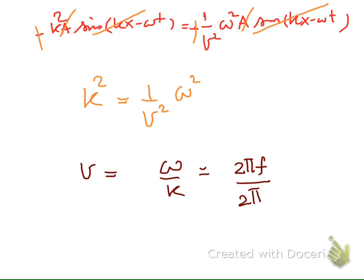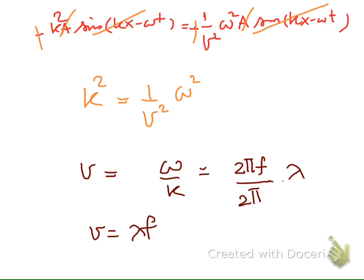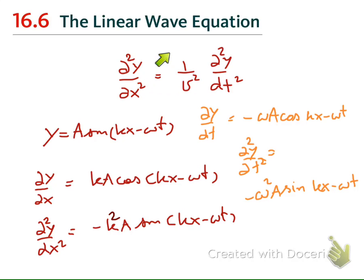So starting from the linear wave equation, we can use this to derive the velocity of the wave. This gives the relation we discussed before in this chapter, and that proves that this equation is the linear wave equation for the traveling wave in one dimension.